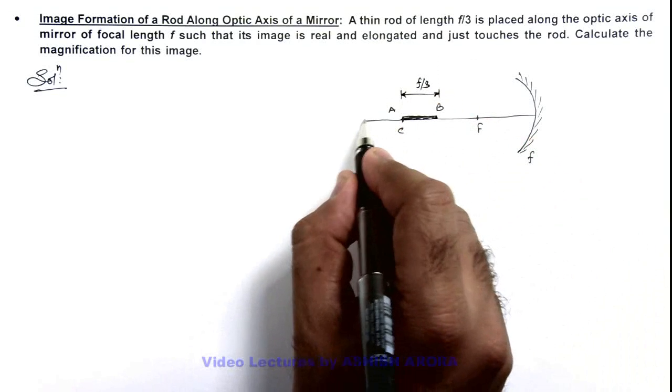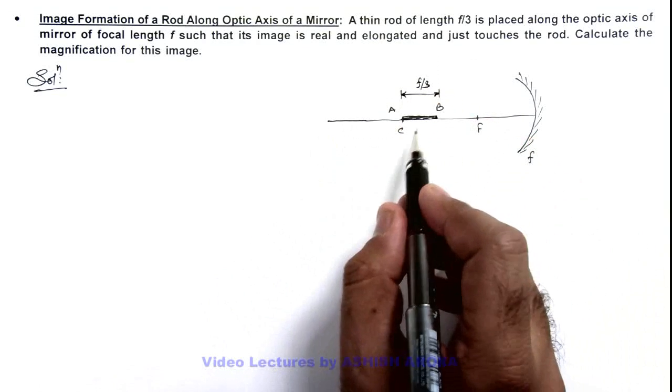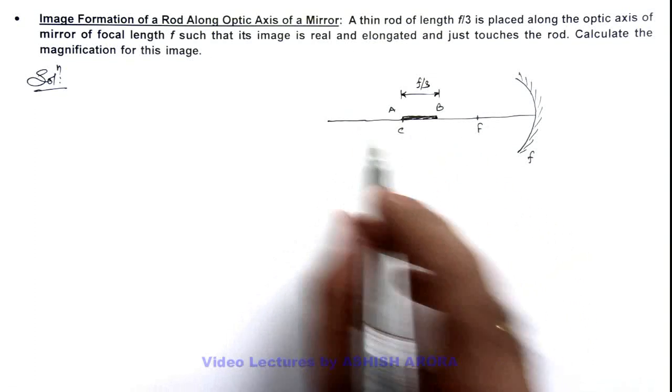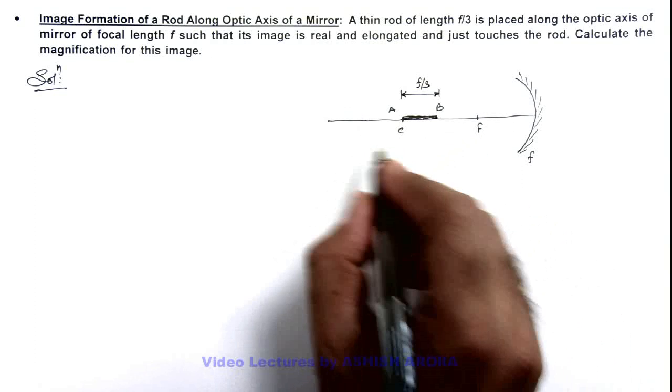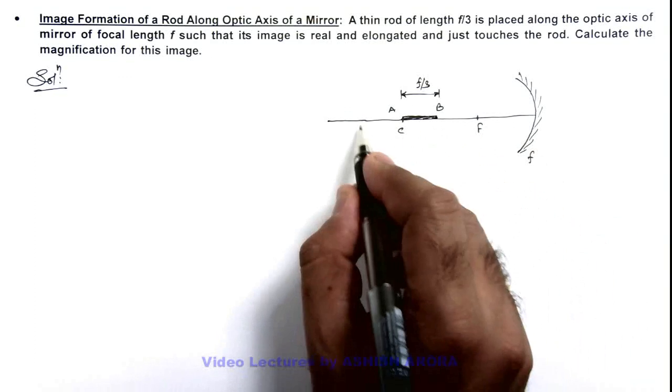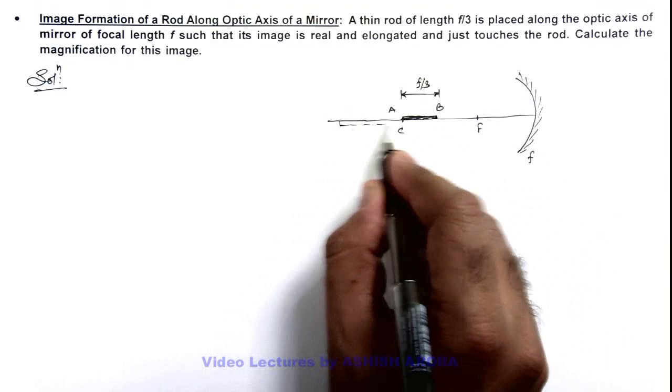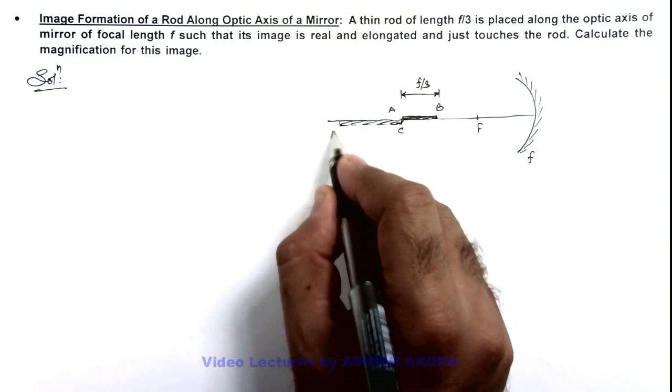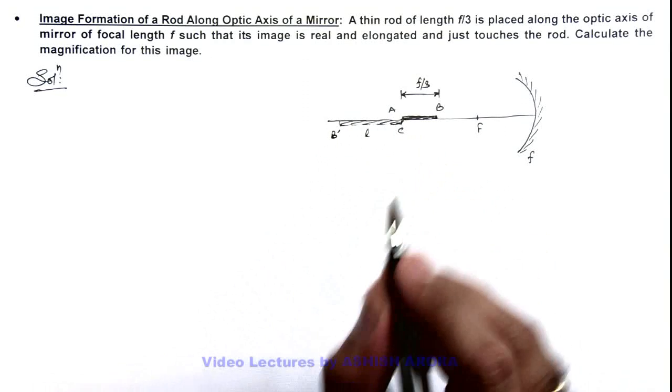In this situation, if the object is placed between center and focal length, its image will be suddenly elongated. And as it is placed along the axis of rod, then this is the way how the image will be produced. Say this is point A and this is B dash. Say its length is L.